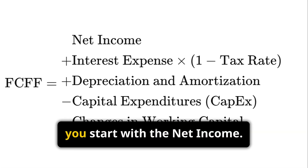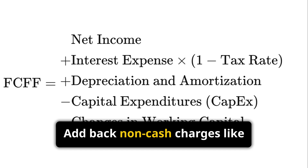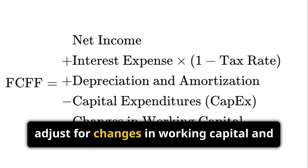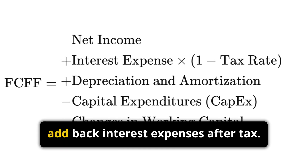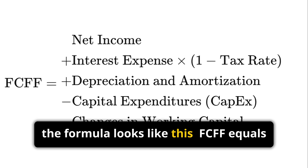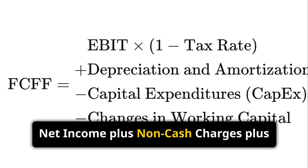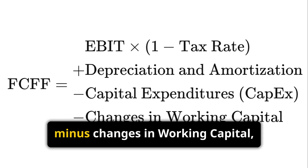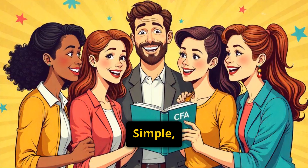To calculate FCFF, you start with net income. Add back non-cash charges like depreciation and amortization. Then adjust for changes in working capital and capital expenditures. Finally, add back interest expenses after tax. So the formula looks like this: FCFF equals net income plus non-cash charges plus interest expenses times (1 minus tax rate) minus changes in working capital minus capital expenditures. Simple, right?